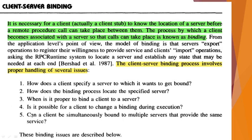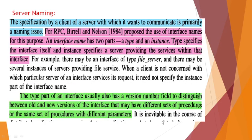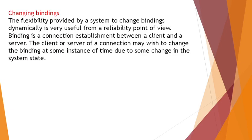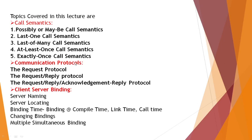All five issues related to client-server binding have been discussed: server naming, server locating, binding time, changing bindings, and multiple simultaneous binding. Overall, the topics covered in this lecture are five types of call semantics, three types of communication protocols, and client-server binding with these five issues. That is the end of unit two. If you have any doubts, we will have a Zoom class soon. Thank you.